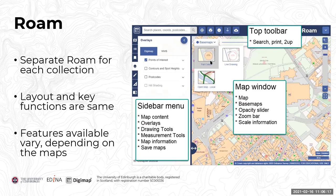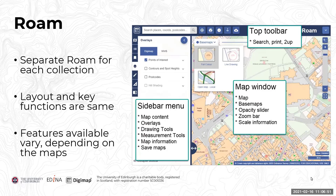The base maps are either the same map in a different style — such as full colour or a line drawing style — or a different map product altogether, but viewed at the same scale you're currently at. We have an opacity slider which allows you to make your map fade out or display at full colour. There is also a zoom bar which allows you to zoom in and out, and an indication of scale information at the bottom right of the map window.